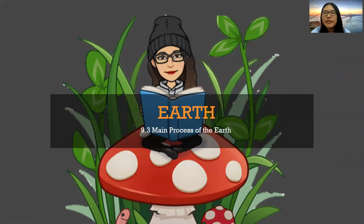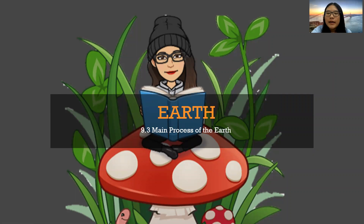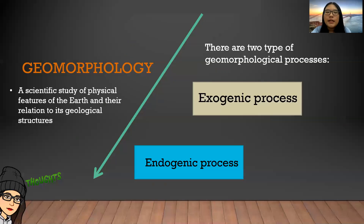Hey guys, welcome back to the Earth series. In this video, we are going to talk about 9.3 main process of the Earth. Let's start off by understanding the meaning of geomorphology. It is a scientific study of physical features of the Earth and their relation to its geological structure.